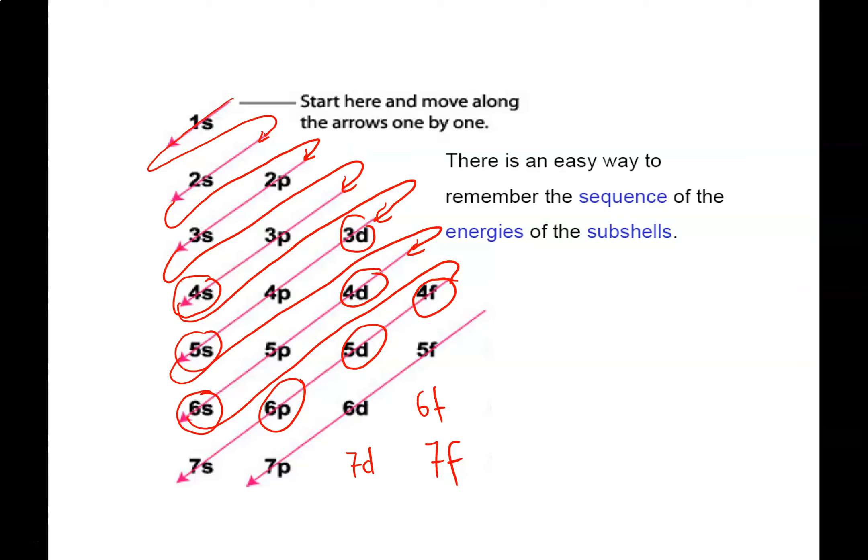You should have a copy of this diagram handy when you're working on electron configuration problems. You should also know how to use it - it's pretty simple, you just follow the sequence. Keep in mind that in an S subshell you put 2 electrons, in a P subshell you put 6 electrons, in a D subshell you put 10, and in an F you put 14.